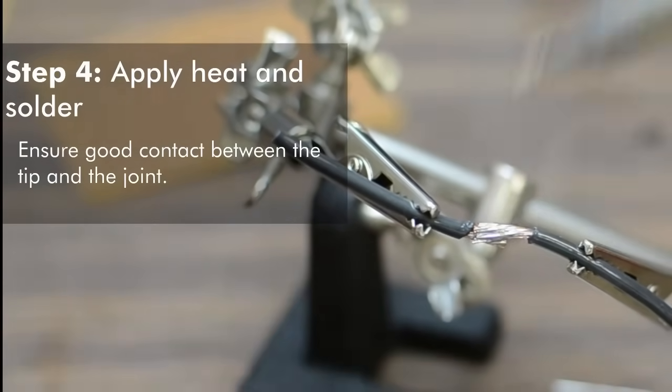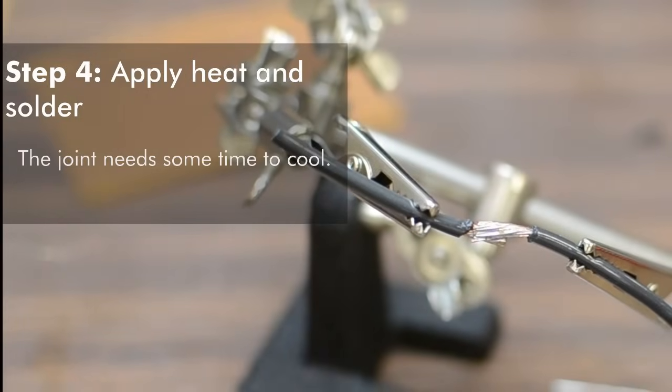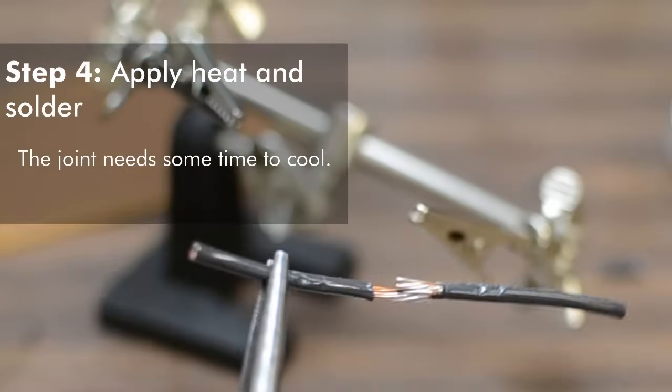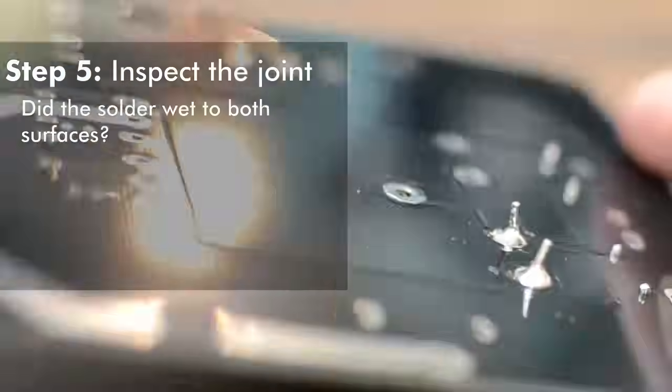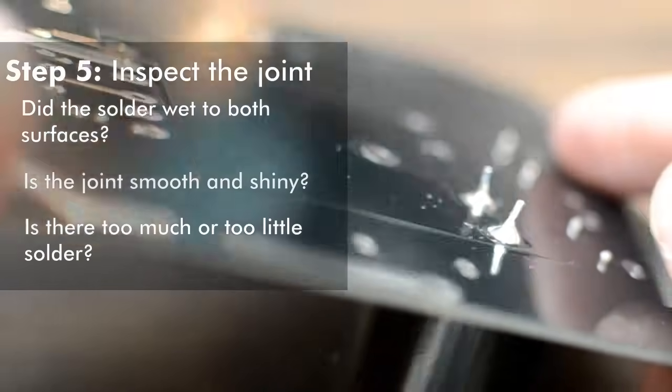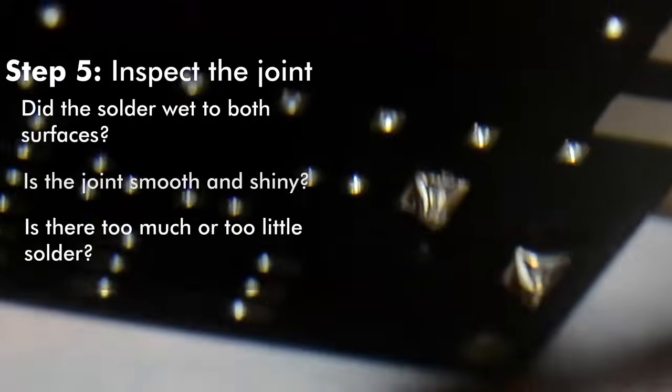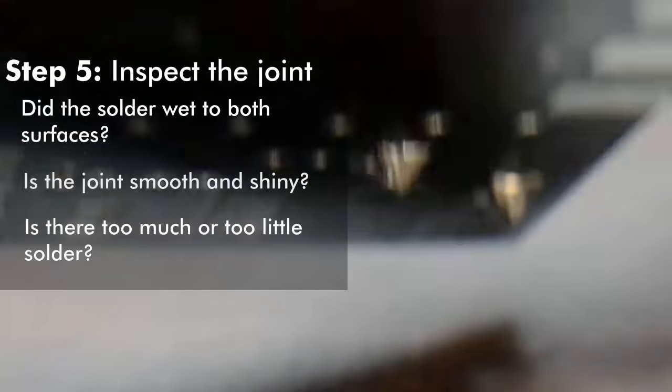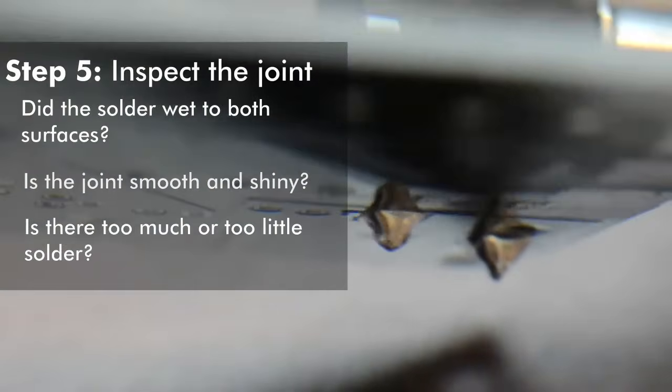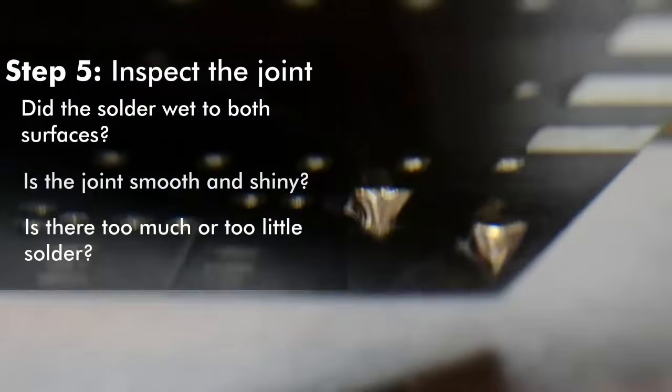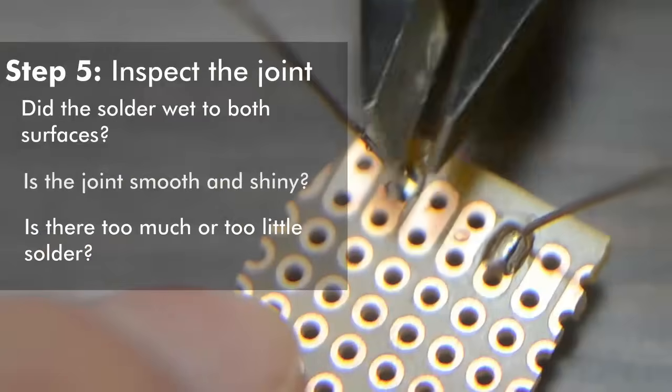When you're done, remove first the solder and then the iron. The joint will need a few seconds to cool so don't disturb it. Last, check whether you made a good connection. Did the solder wet to both surfaces? Is the joint smooth and shiny? Is there too much or too little solder? On a printed circuit board, the connection should make a volcano shape adhering smoothly to both the entire pad and the component lead. Finally, trim the leads of your components if you need to.